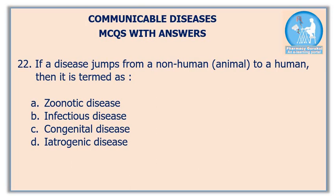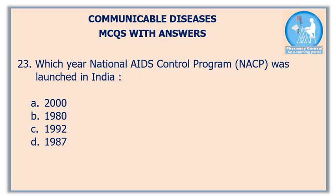Question number 22: if a disease jumps from a non-human to a human, then it is termed as — option A: zoonotic disease, option B: infectious disease, option C: congenital disease, option D: iatrogenic disease. The correct answer is option A: zoonotic disease.